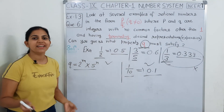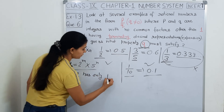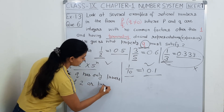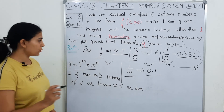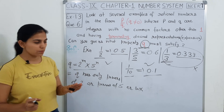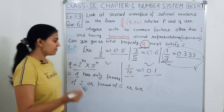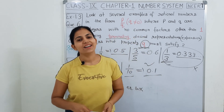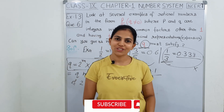तो हमारा Q कैसा होना चाहिए? हम answer में लिखेंगे: that Q has only powers of 2, or powers of 5, or both. मतलब जो Q है हमारा वो या तो 2 हो, या फिर 2 की power भी हो सकती है — 4 भी हो सकता है — या फिर 5 की powers में हो, या फिर 2 and 5 दोनों की powers में हो. So this is done. I hope आपको question clear हो गया होगा. Next video में लेकर आएंगे question number 7. Upcoming videos के लिए चैनल को subscribe जरूर करें, and thank you for watching, bye bye!